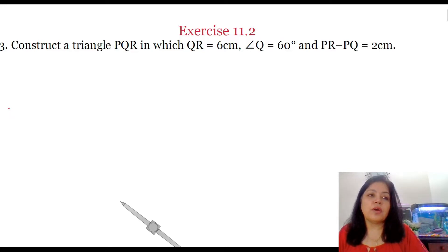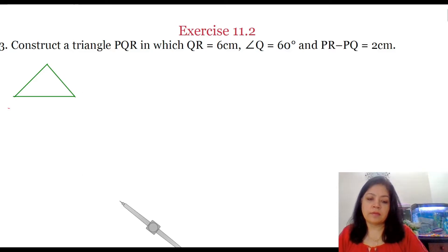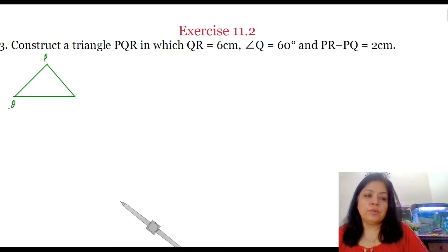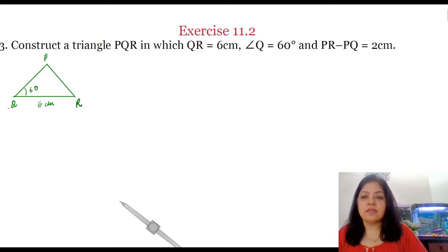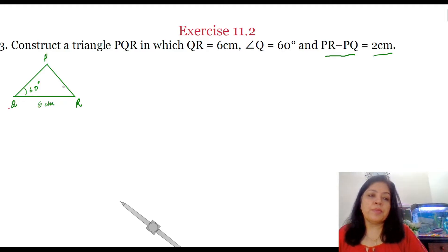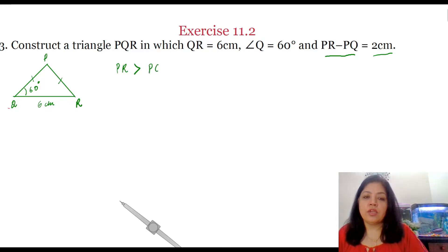First let us draw a rough figure. Let this be the triangle PQR where QR is equal to 6 cm, angle Q is equal to 60 degrees, and PR minus PQ is equal to 2 cm. Here PR is this side and PQ is this side. From this we can say that PR is greater than PQ.